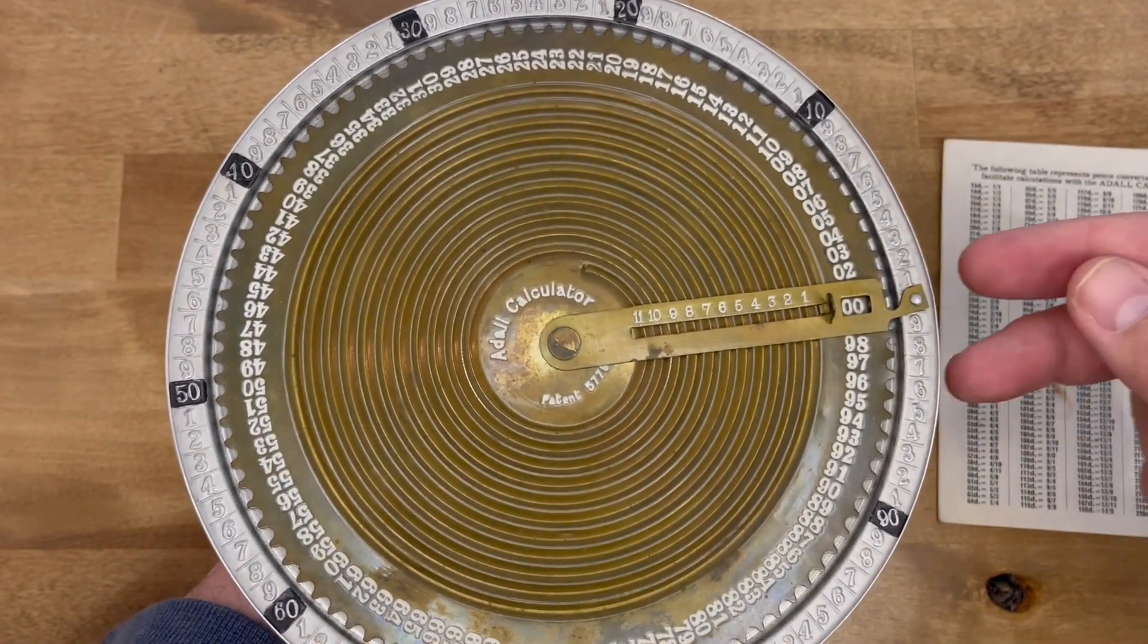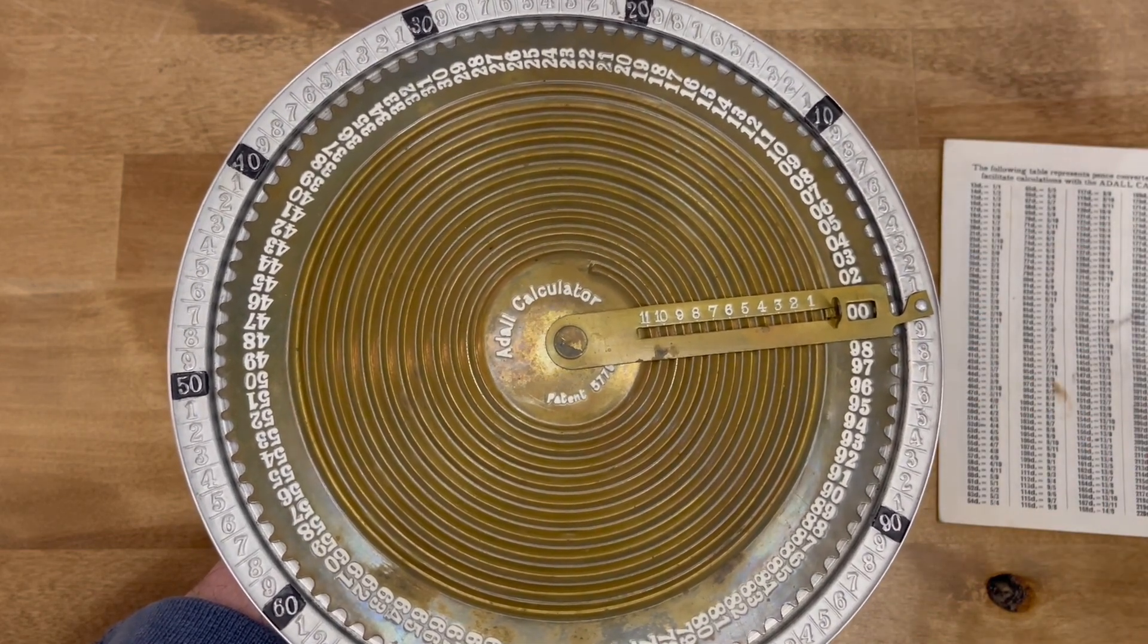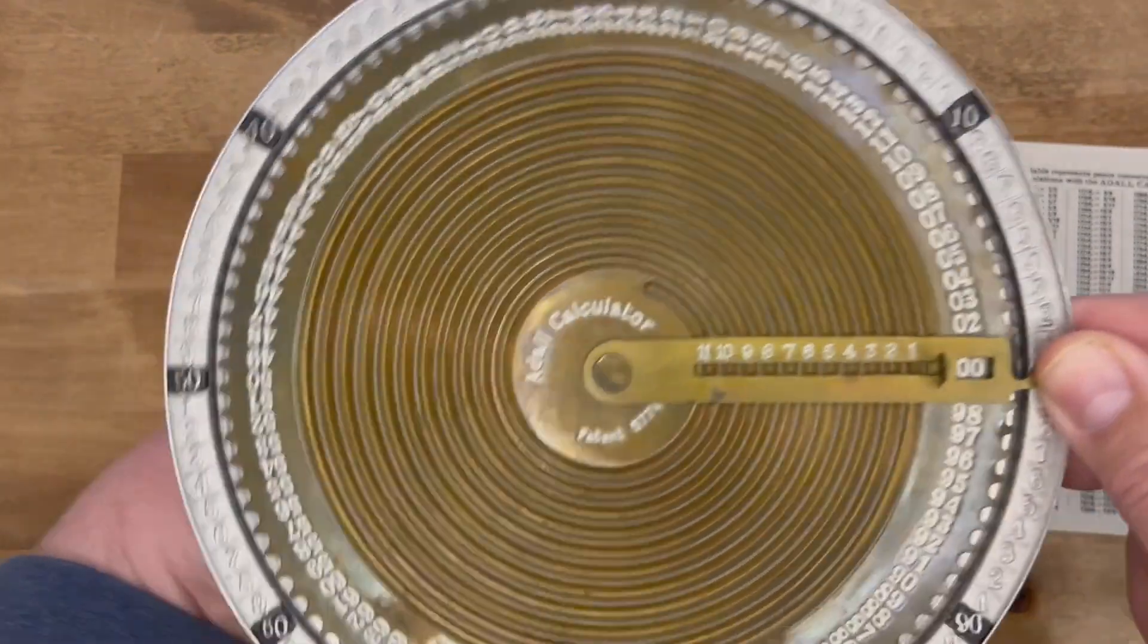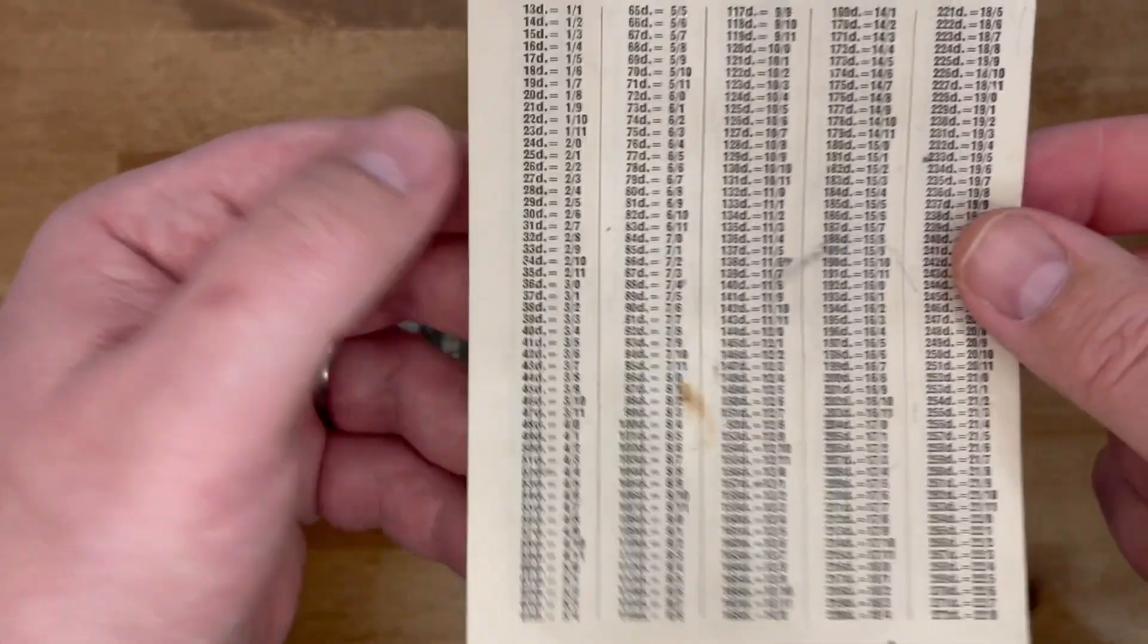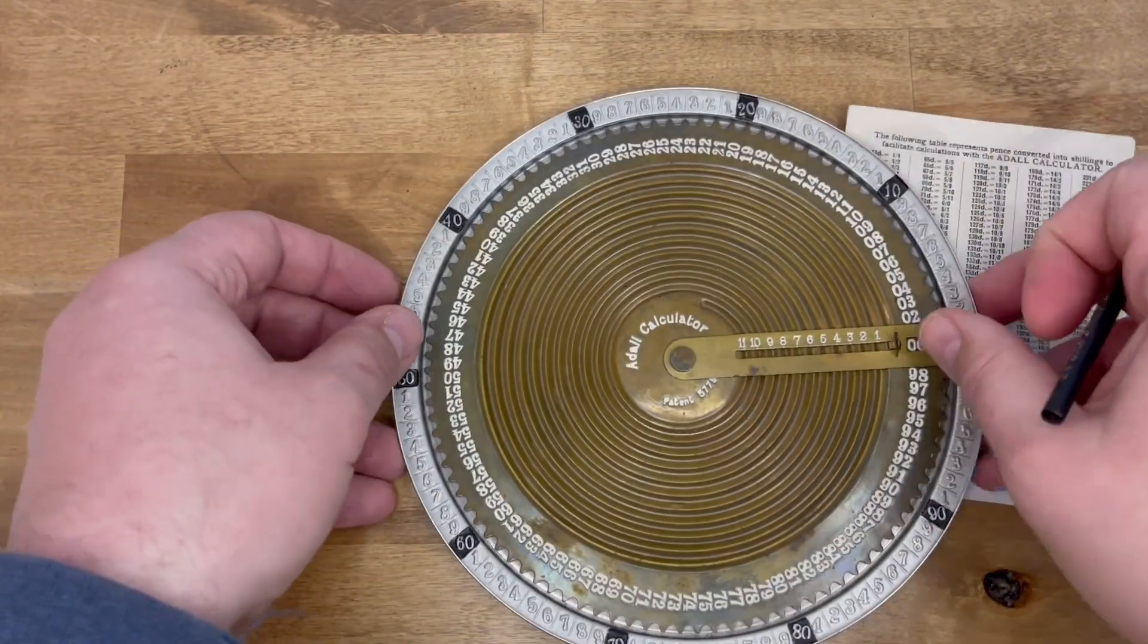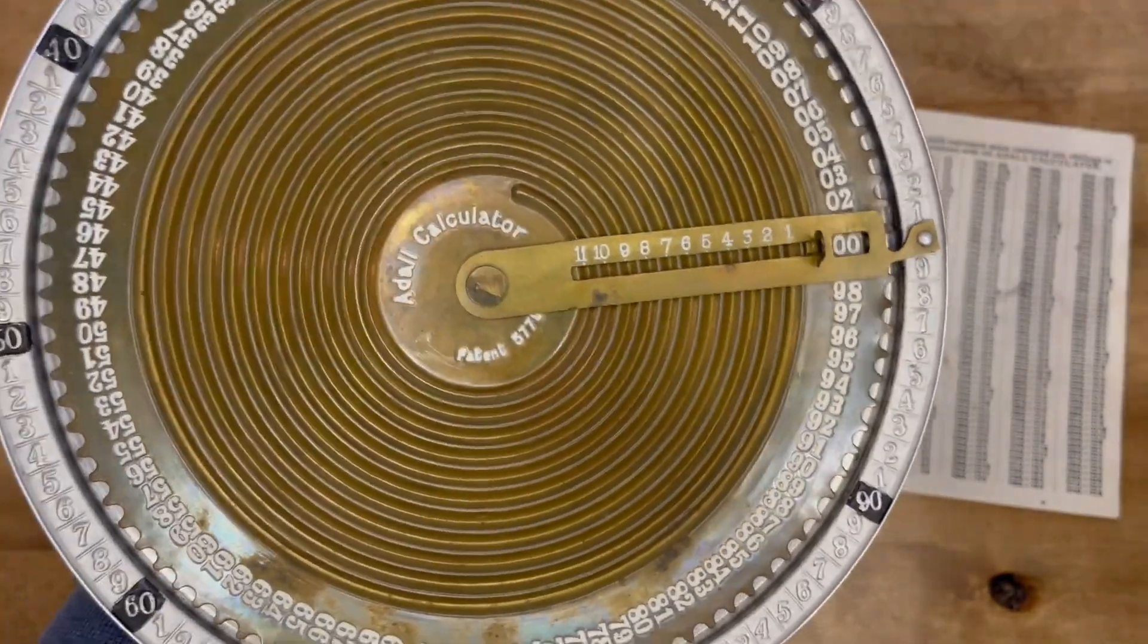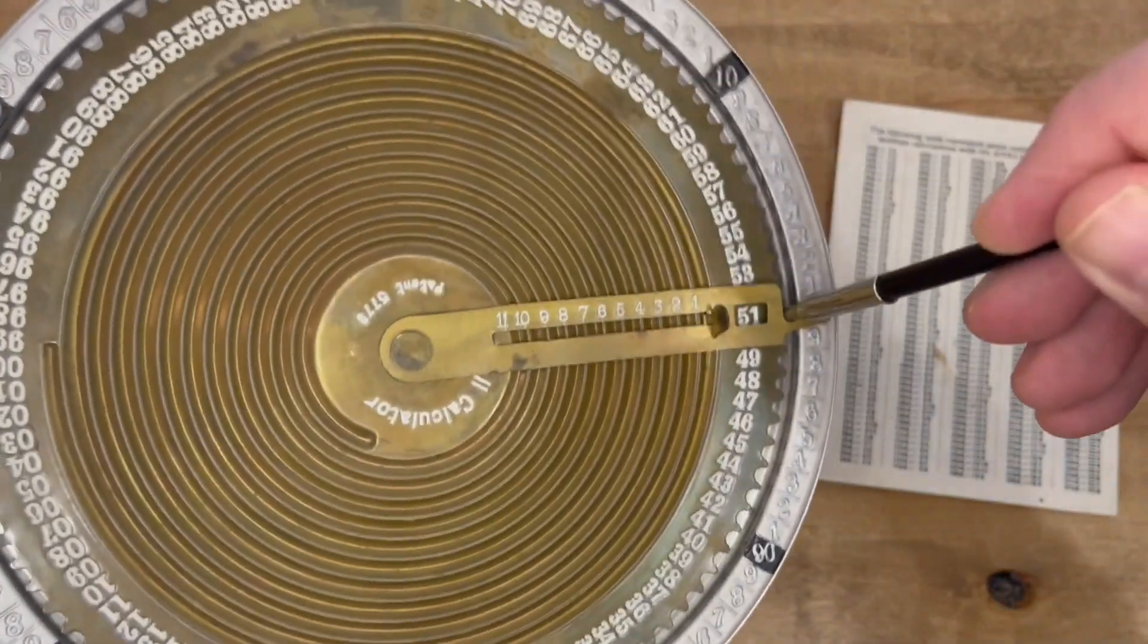So every Adol came with this little table, which could convert shillings to pence. So if a user wanted to add 12 shillings 7 pence to 13 shillings 6 pence, first he would consult the chart. 12 shillings 7 pence converted to 151 pence. So he would add that first. Adding a number larger than 100 on the Adol means that you have some choices to make.